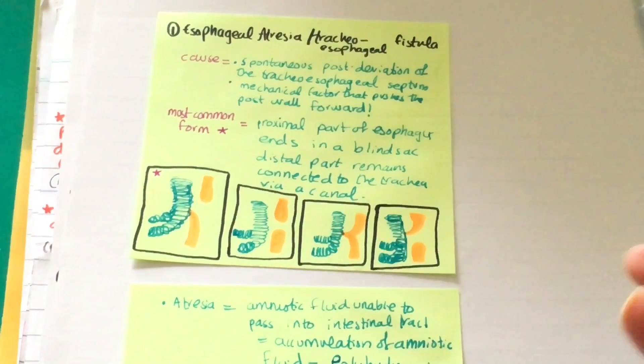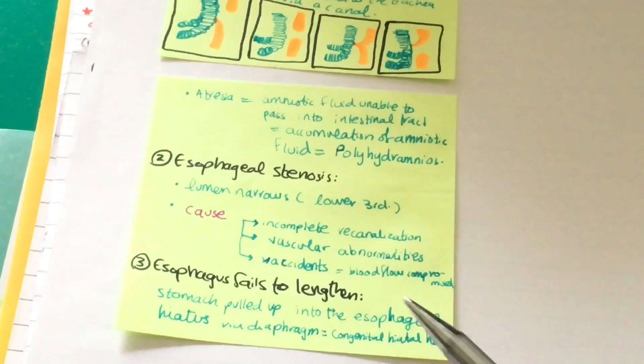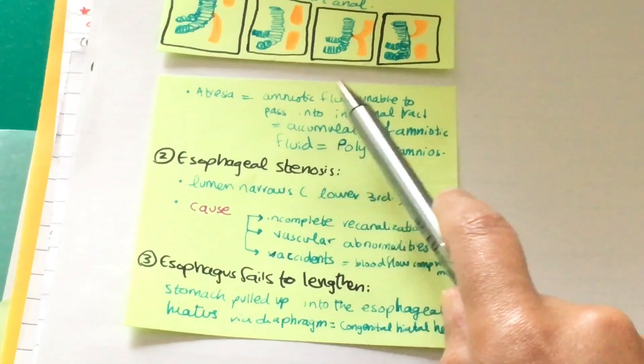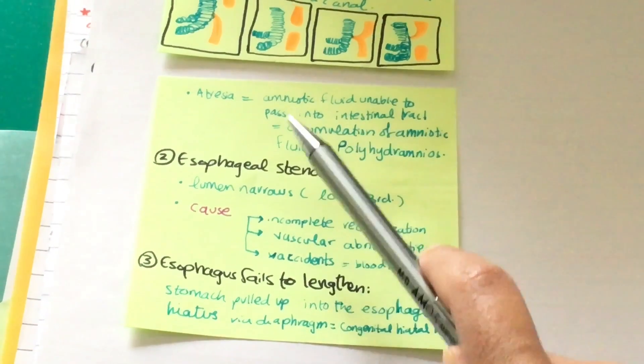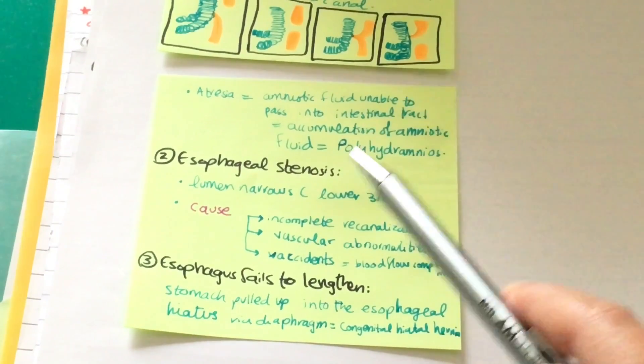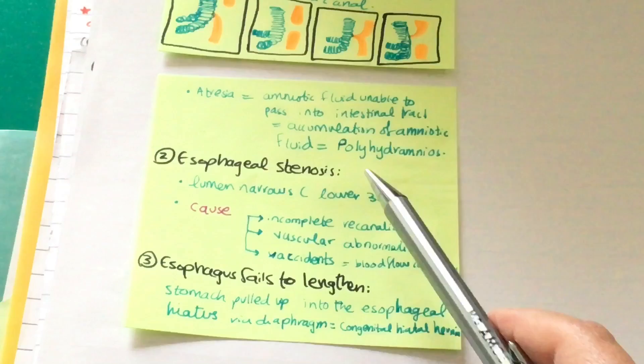The atresia may affect amniotic fluid. When we have atresia, the amniotic fluid is unable to pass into the intestinal tract, which leads to accumulation of amniotic fluid, resulting in polyhydramnios.